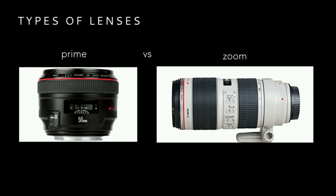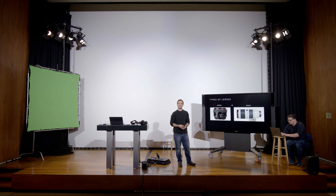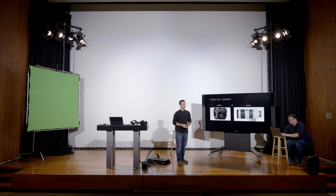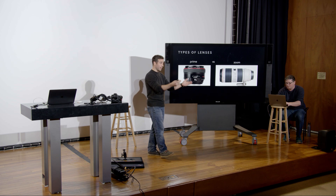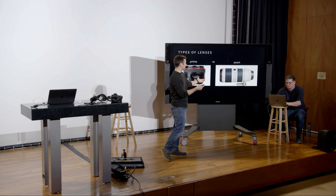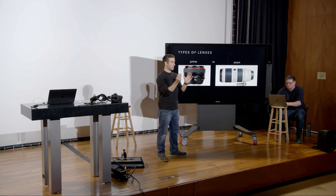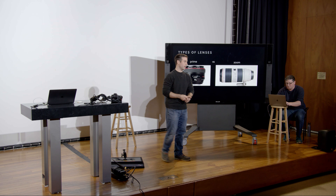We have two typical types of lenses: prime lenses and zoom lenses. A prime lens has a fixed focal length, meaning you can't zoom. A zoom — or variable focal length — lens can zoom; you literally crank a ring on the lens and the image either enlarges or gets farther away.